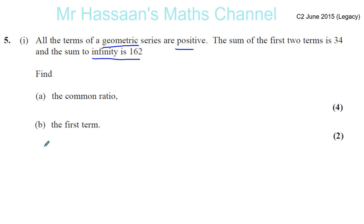For example, the first term, we don't know what it is, but we know the sum of the first two terms is 34. So let's call the first term X and the second term Y. If you add them together, you get 34. Let's call the first term A, because that's what it's normally called.